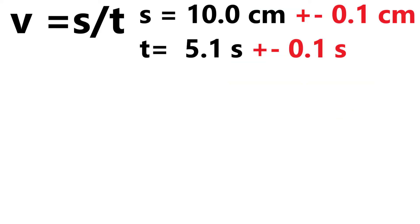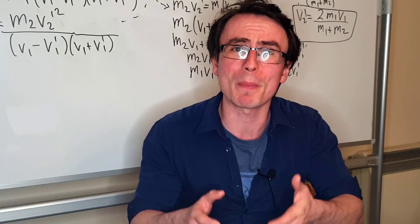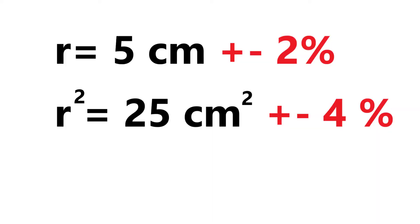if we multiply or divide quantities, we need to add the percentage uncertainties. If we raise a quantity to a power, let's say we square a quantity, we need to multiply the percentage uncertainty by that power.